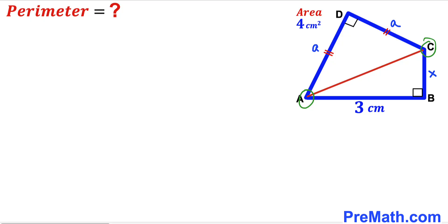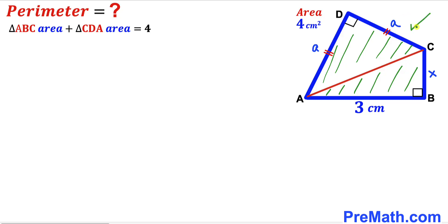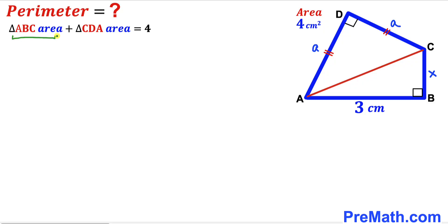In the next step I have connected vertices A and C, which gives us two right triangles. The area of triangle ABC plus the area of triangle CDA equals the area of the whole quadrilateral ABCD. We have been given the area of the quadrilateral as 4 cm², so we can write: area of triangle ABC + area of triangle CDA = 4.